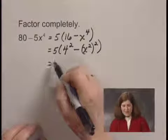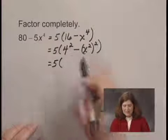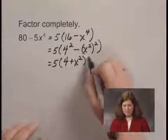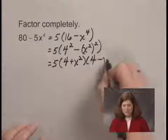So I factor as 4 plus x squared, times 4 minus x squared.